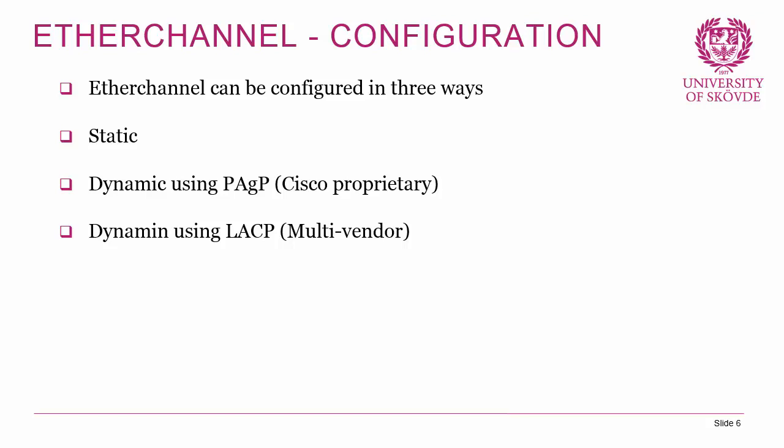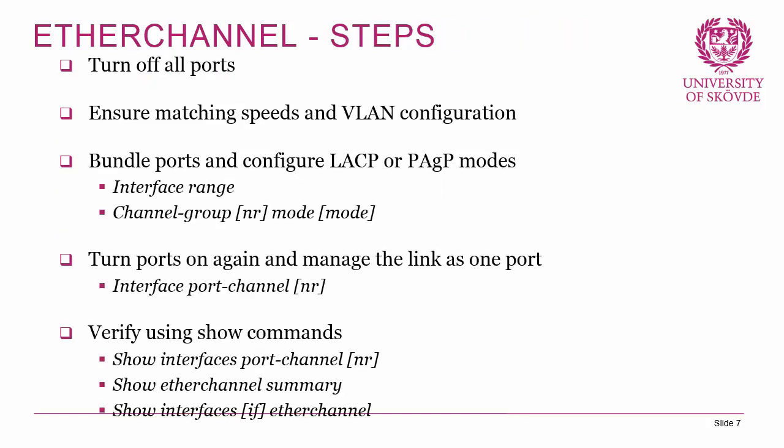Before configuring an EtherChannel, the recommended first step is to shut down all ports. This is strongly encouraged because when setting up two or more trunks between switches, Spanning Tree can go haywire and start disabling ports. Shutting down the ports during configuration saves a lot of trouble. Once ports are off, ensure both sides have matching speed and VLAN configuration, then bundle the ports and configure LACP or PAGP.